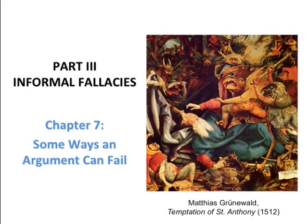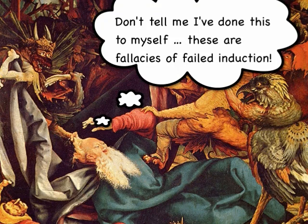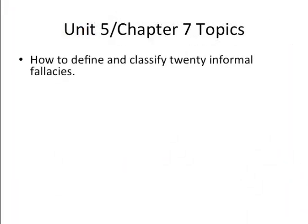Welcome to Unit 5. This is the first segment of a multi-part lecture on informal fallacies associated with failed induction. The segments cover material presented in Chapter 7 of our text. The image you see is a detail of a painting by Matthias Grünewald entitled The Temptation of St. Anthony, painted in 1512. We have some specific objectives in this unit — first, an overview of the work before us in Units 5, 6, 7, and 8, which are all concerned with informal fallacies.